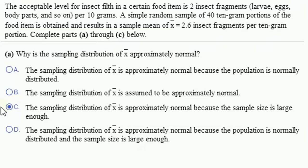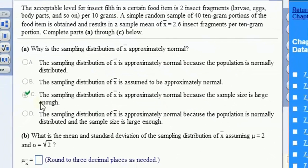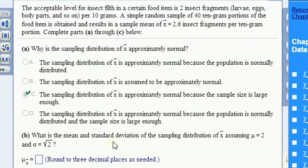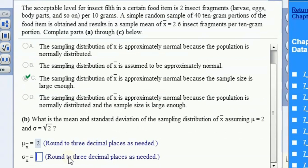What is the mean and the standard deviation of the sampling distribution assuming μ equals 2 and σ equals square root of 2? This is to say the population has a mean of 2 and a standard deviation of square root of 2. Well, that means that the sampling distribution will have a mean of 2 also.